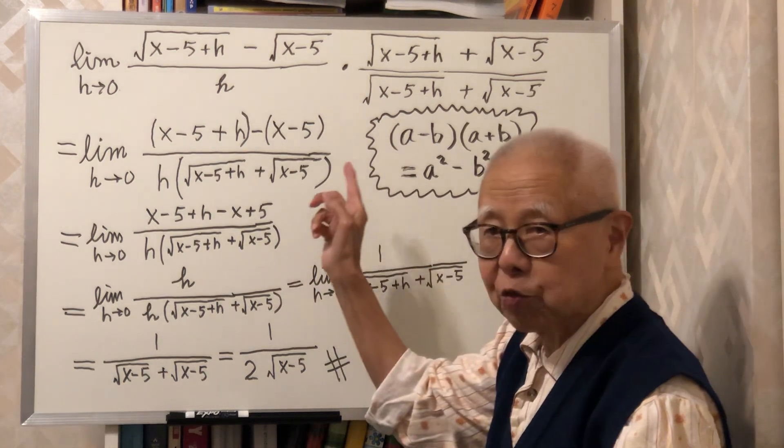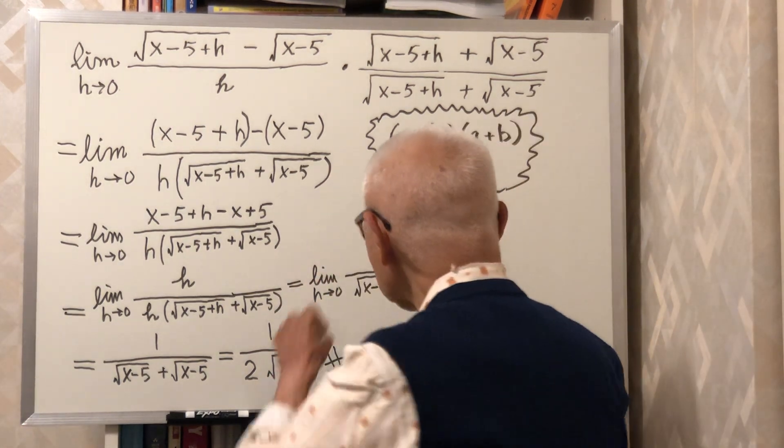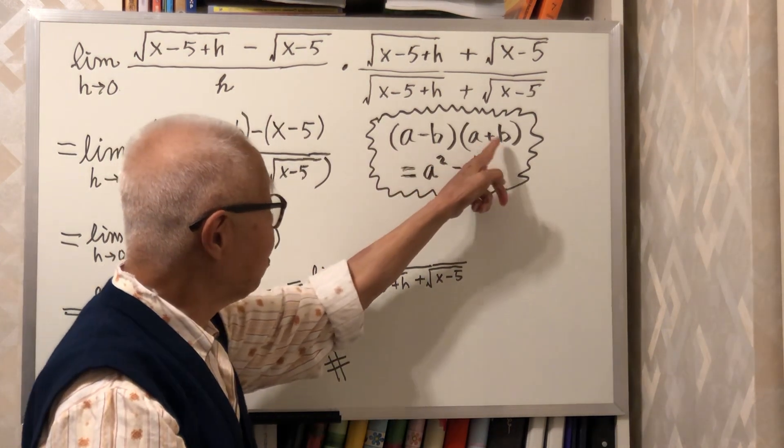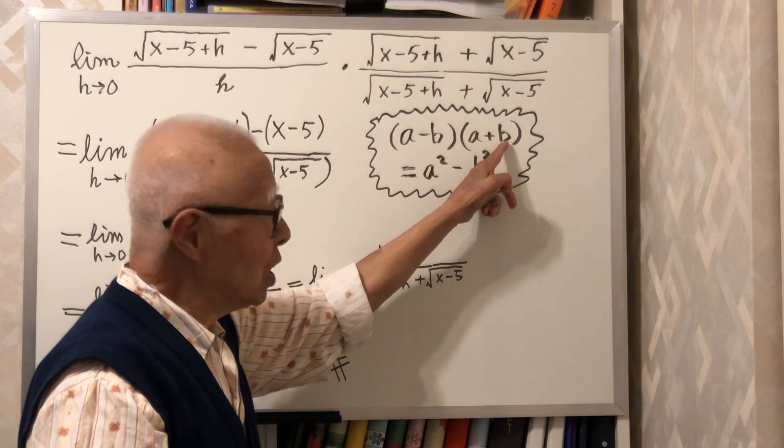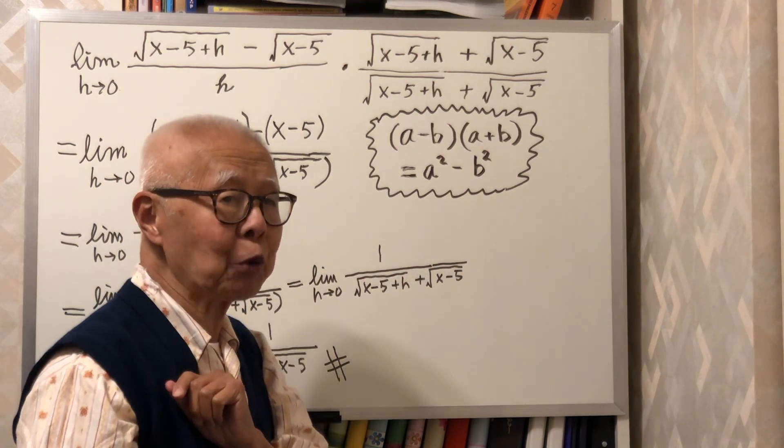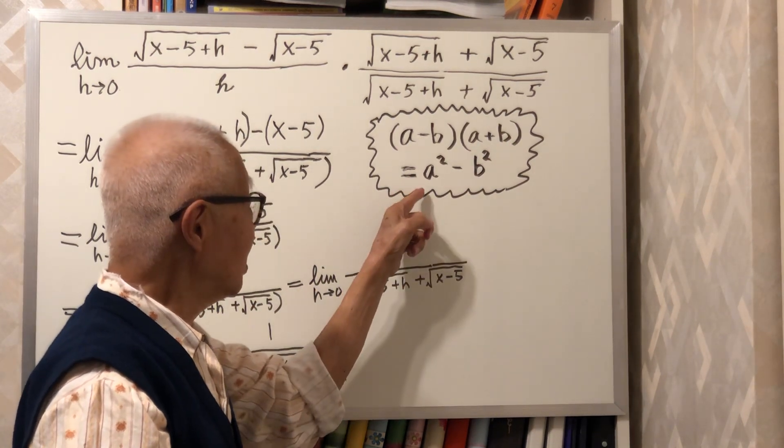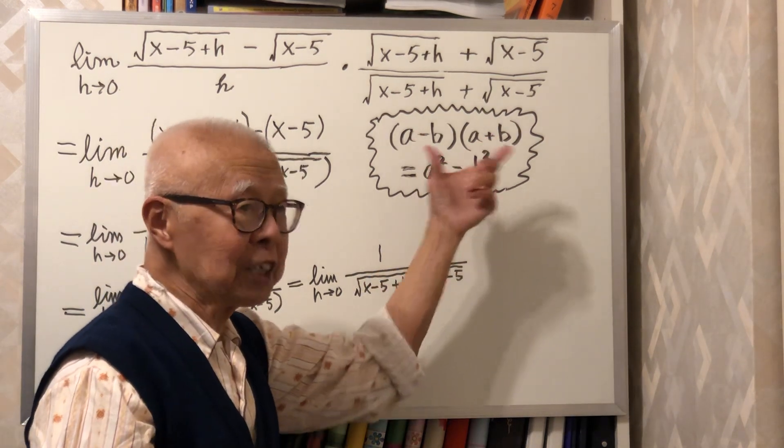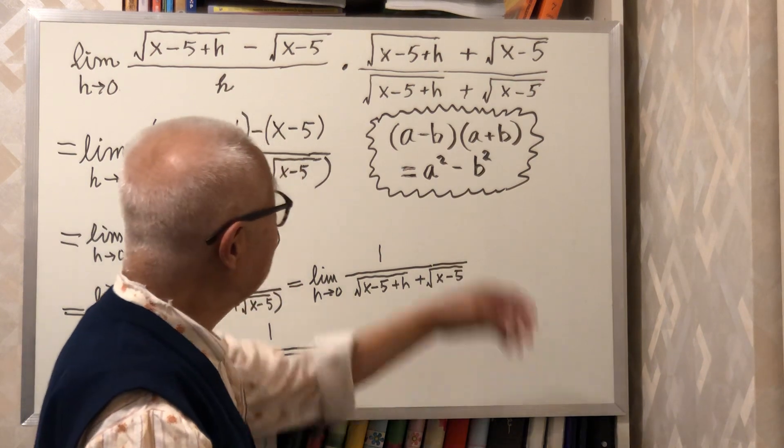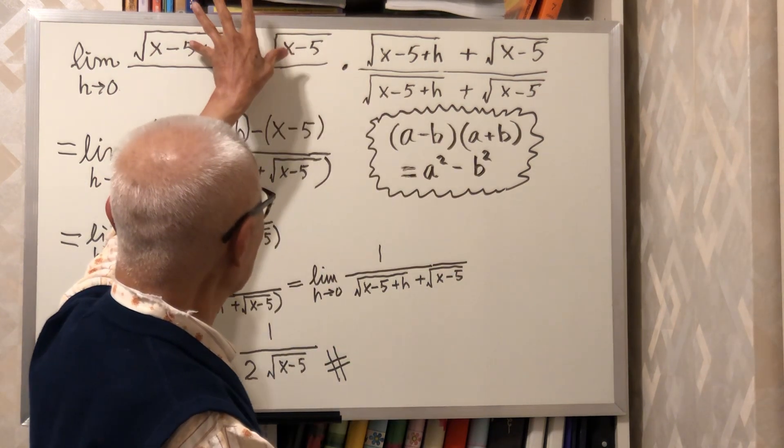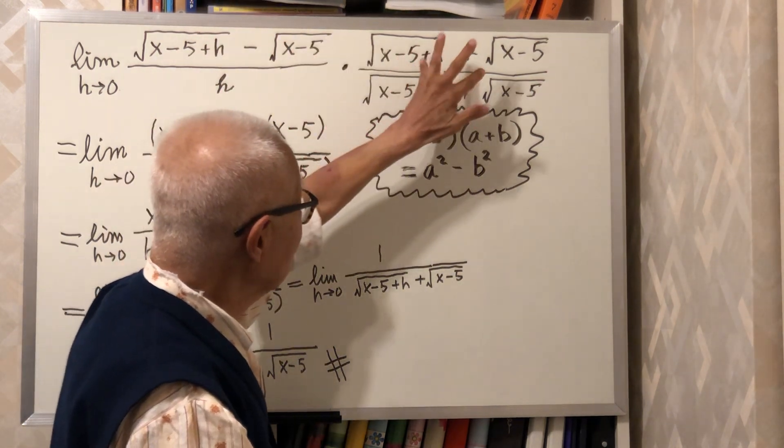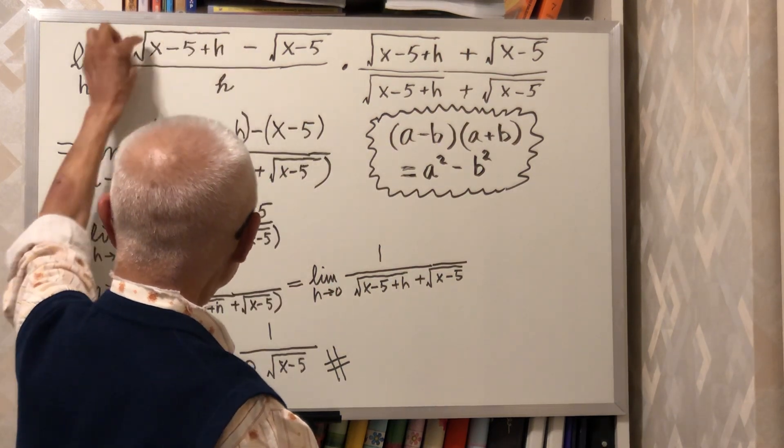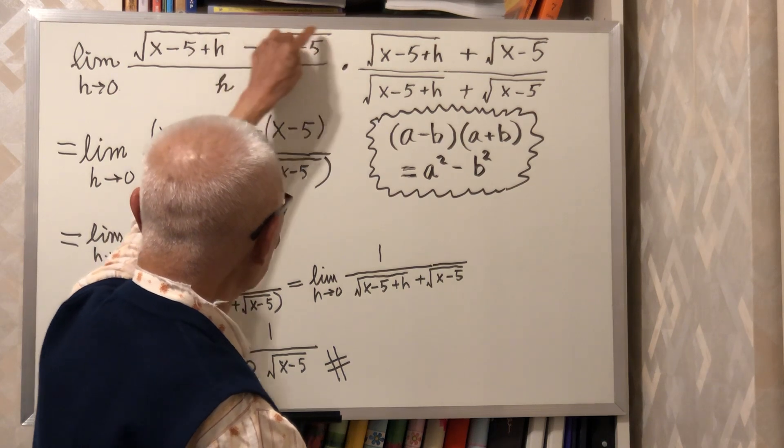Remember this formula. (a - b) times (a + b) is the difference of two squares. It is a² minus b². Because of this relation, when we multiply this numerator with this numerator you get a² minus b².